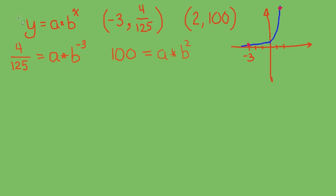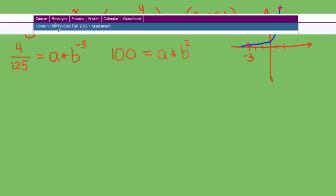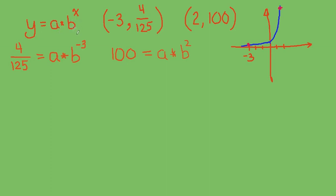Now as a general rule of thumb, whenever you have an equation with two unknowns, we need to figure out what a and b are, then you're going to need two points to find those. If you had three unknowns you need to have three points and so on. So now we just need to solve these equations to find the a and b that make both of them true.